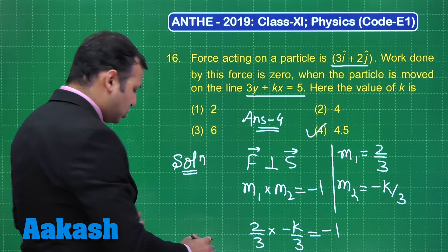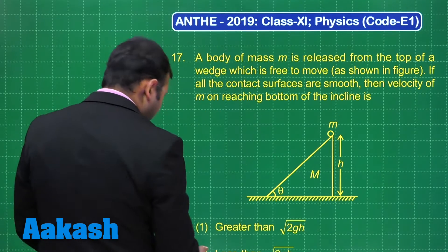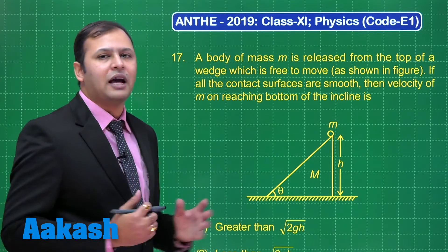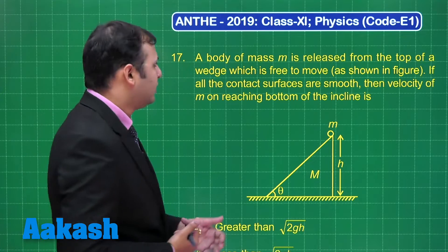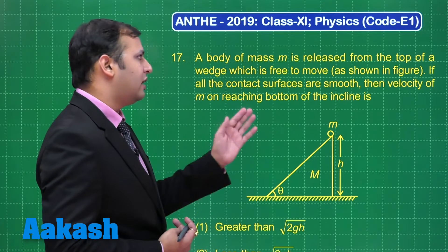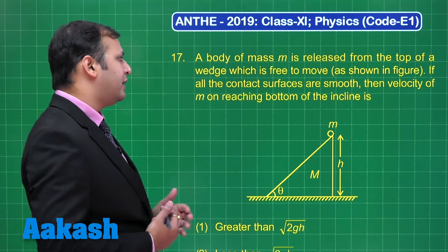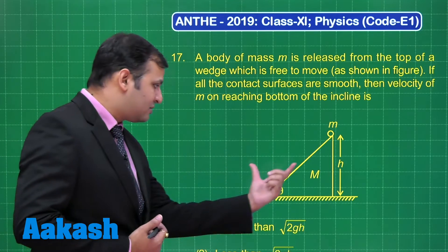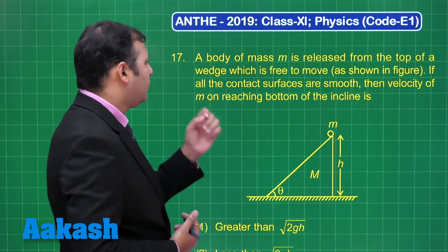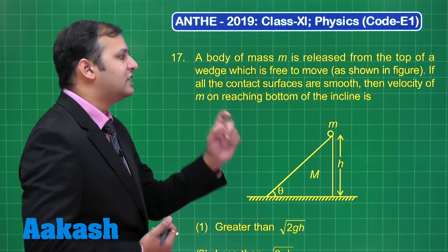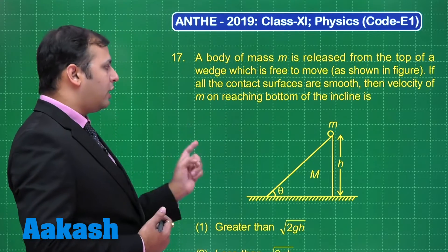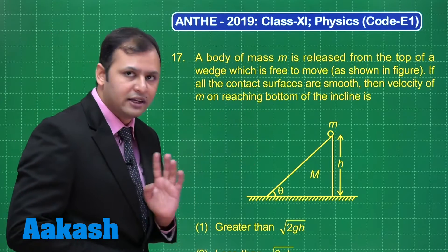Now let's move to our next question, question number 17. This is a simple application of work-power-energy. Here a body of mass m is released from the top of a wedge which is free to move. So this wedge can move left or right. If all contact surfaces are smooth, then the velocity of m on reaching the bottom of the incline is...